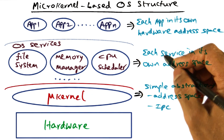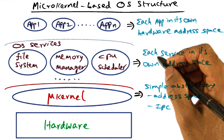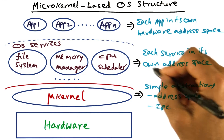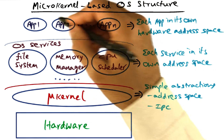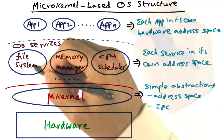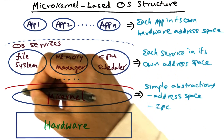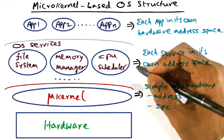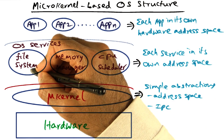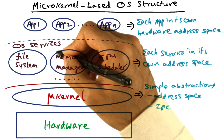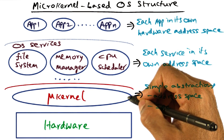We no longer have that monolithic structure we had before. Instead, each operating system service is in its own hardware address space. In principle, there is no distinction between regular applications and the system services that are executing as server processes on top of the microkernel. Thus, we have very strong protection among the applications, between the applications and system services, among the system services, and between application, system services, and the microkernel.